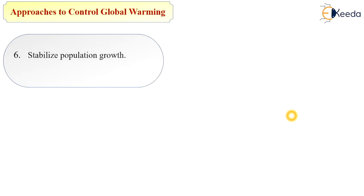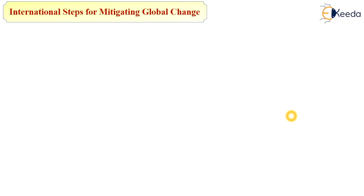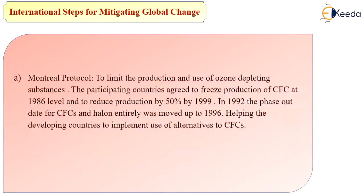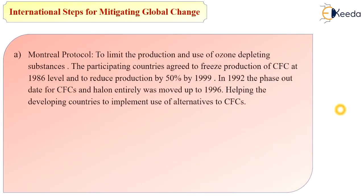Additional approaches include stabilizing population growth and using energy resources judiciously. There are also international steps for mitigating global climate change. The first is the Montreal Protocol, aimed at limiting the production and use of ozone-depleting substances. Participating countries agreed to freeze production of chlorofluorocarbons at 1986 levels and reduce production by 50% by 1999. In 1992, the phase-out date for chlorofluorocarbons and halons was moved up to 1996, and developing countries were helped to implement alternatives.